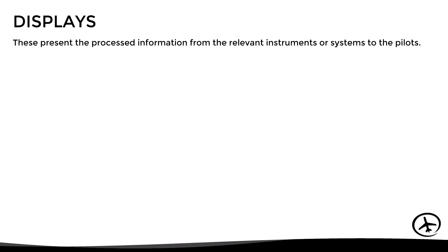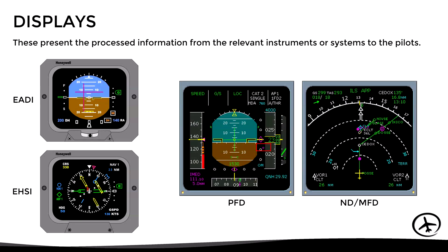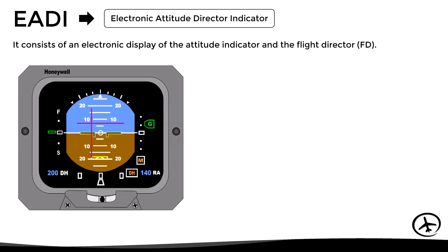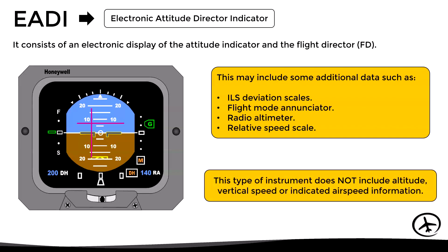The displays present the processed information from the relevant instruments and systems to the pilots. In complete EFIS systems, the displays used are known as PFD and MFD. Starting with the Electronic Attitude Director Indicator, it consists of an electronic display of the attitude indicator and the flight director. It may include additional data such as the ILS deviation scales, a flight mode enunciator, the radio altimeter, and a relative speed scale. However, this type of instrument does not include altitude, vertical speed, or indicated airspeed information.